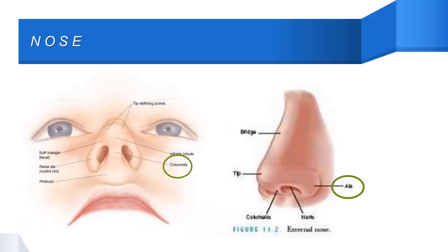The nose is located at the central portion of the face and is easily noticeable if any deformation occurs. The lateral aspect of the nose, called the ala of the nose, guides establishment of the occlusal plane. The line drawn from the ala of the nose to the tragus of the ear is called the ala-tragus line or Camper's line, which helps establish the posterior occlusal plane.